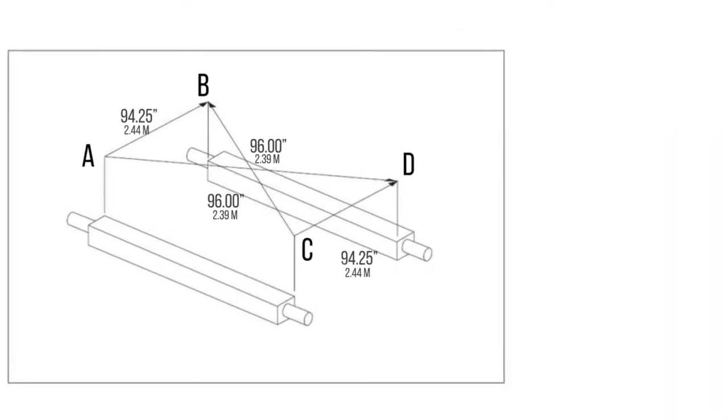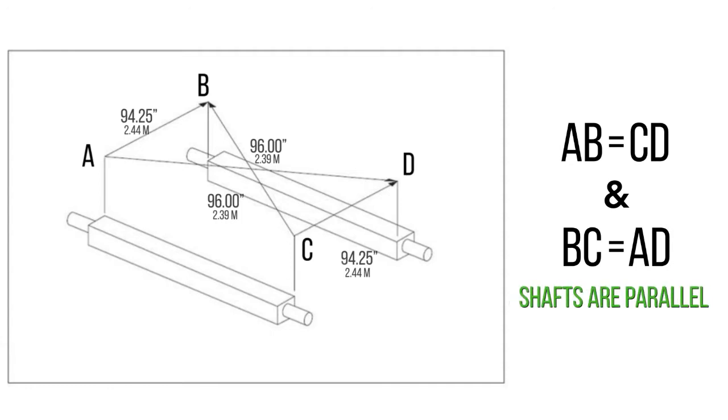To ensure that your shafts are parallel, the measurements you take from point A to point B should equal those from C to D. Also, points B to C should equal A to D. If all of these are true, then your shafts are parallel.